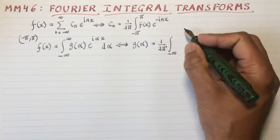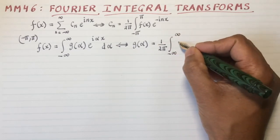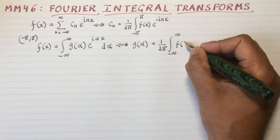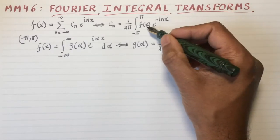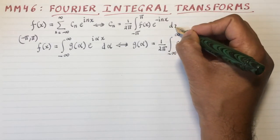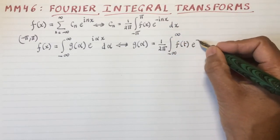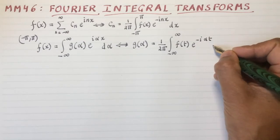But the integral still goes from minus infinity to infinity over the entire range of the variable t. So here I get e to the minus i alpha t dt.